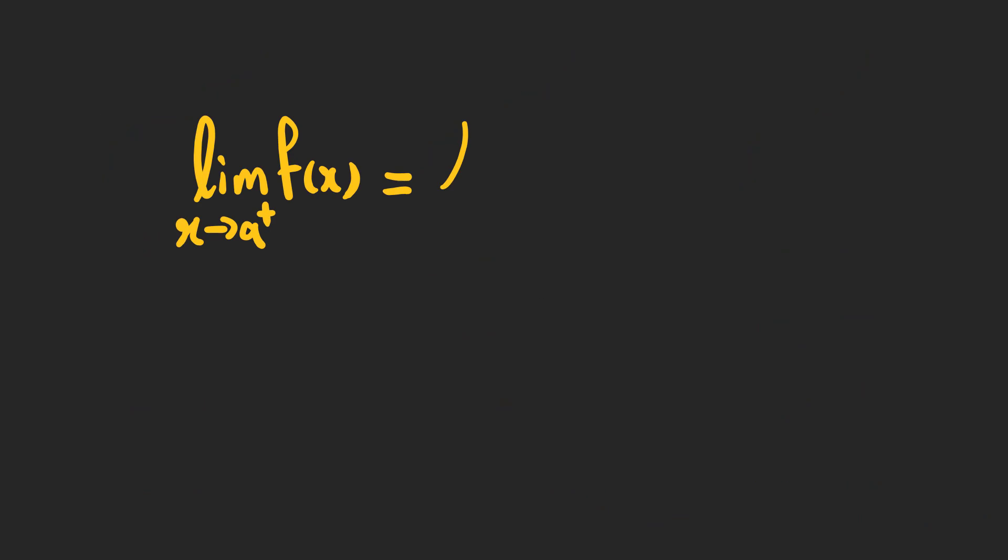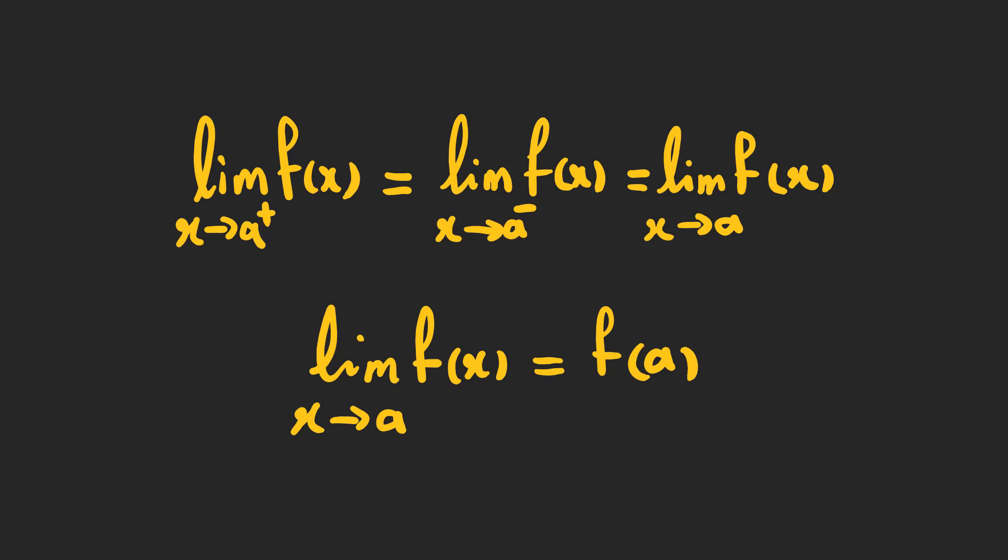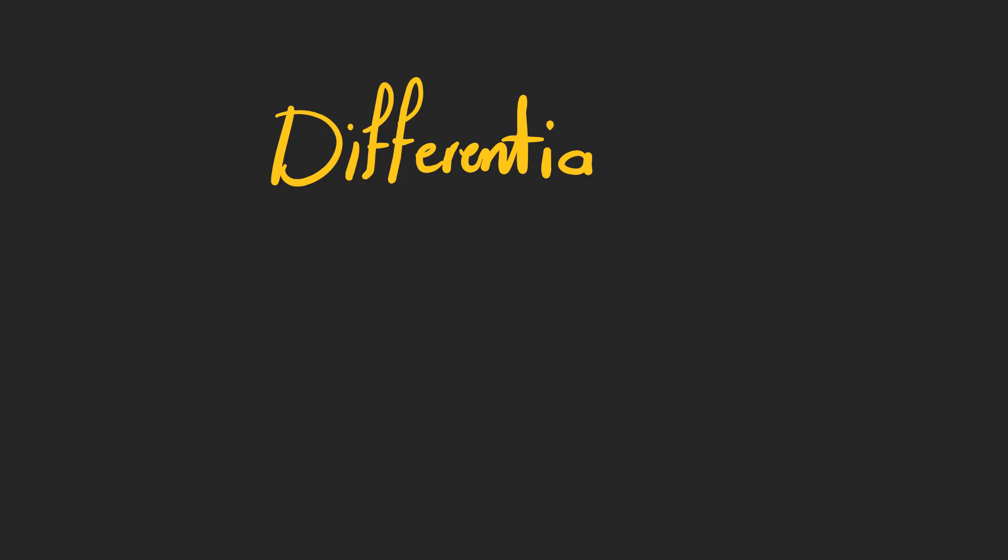So, if the right-hand and left-hand limits are equal at point a, the function has a limit in that point. And if the limits exist at a point and is equal to the value of the function at that point, we say that the function is continuous at that point. Now, it's time to differentiate and find the derivative of a function.